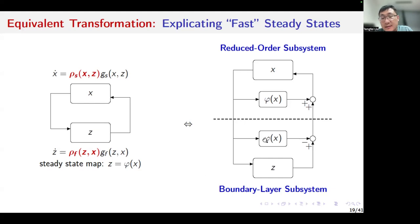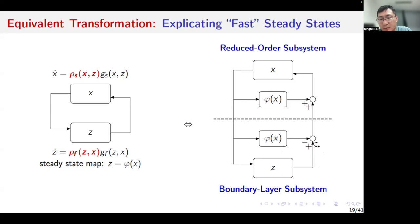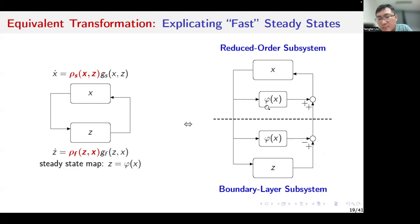This leads to the notion of the boundary layer subsystem. Intuitively, we may use the error state between the fast subsystem and the steady state map to represent the dynamic response of the fast subsystem. If we use the static map phi(x) to approximate the fast subsystem and substitute the static map into the slow subsystem, we get the reduced order subsystem.